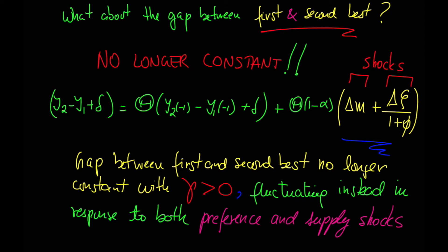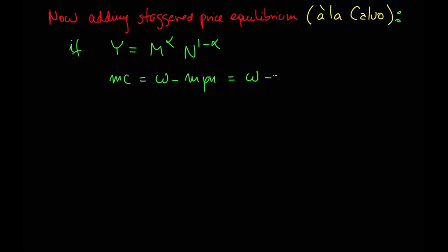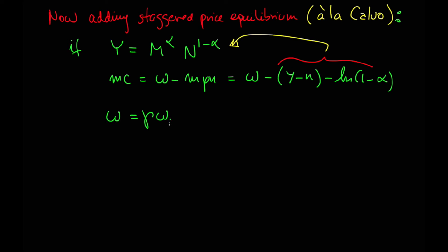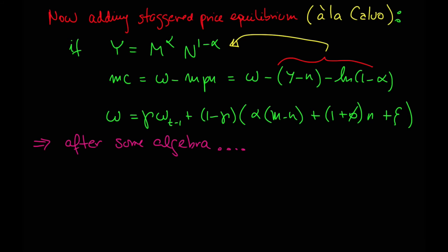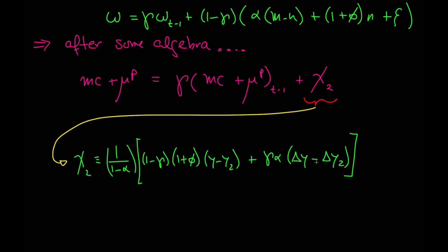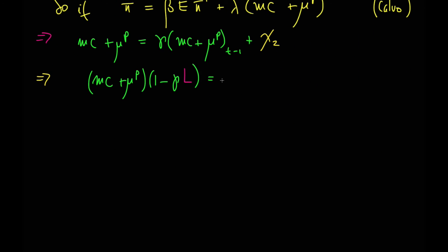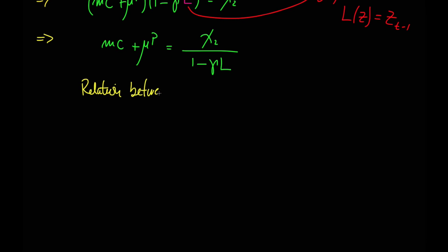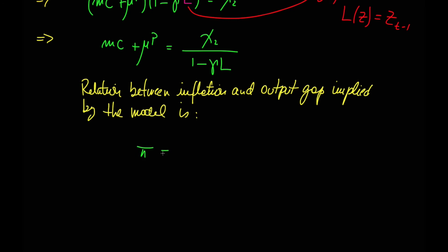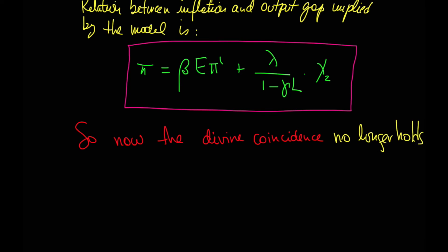So that will depend on preferences and supply shocks. Now we include the price equilibrium à la Calvo, using the production function from firms, the equilibrium condition of the firm, the first order condition, and the last expression for the dynamics of salaries. We can see after some algebra that there is a relation between the markup and the marginal cost across time that is associated with chi2, and that chi2 is not constant. Working through the expression for the dynamics of the markup gap and the marginal cost and using the lag operator, we can find a relation between inflation and output gap implied by the model, which is psi.